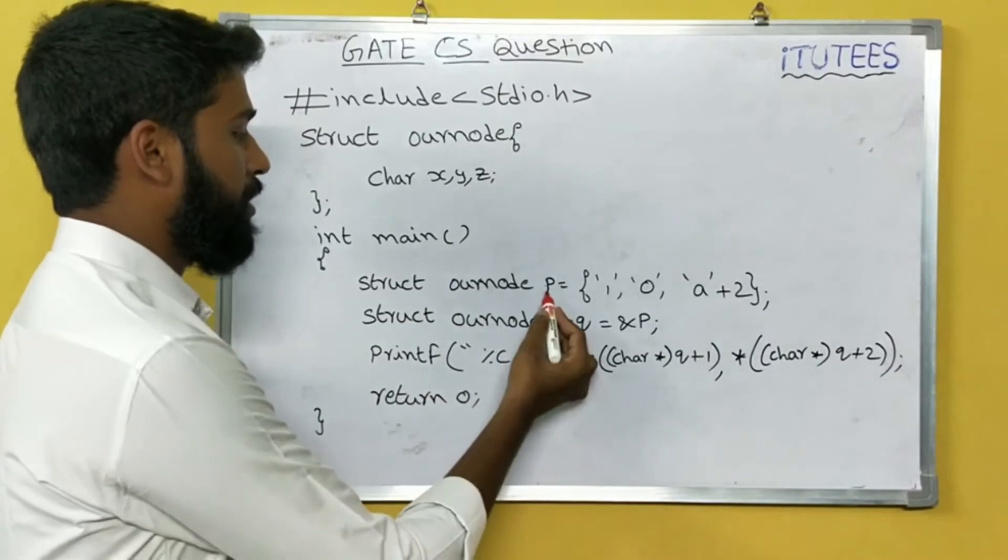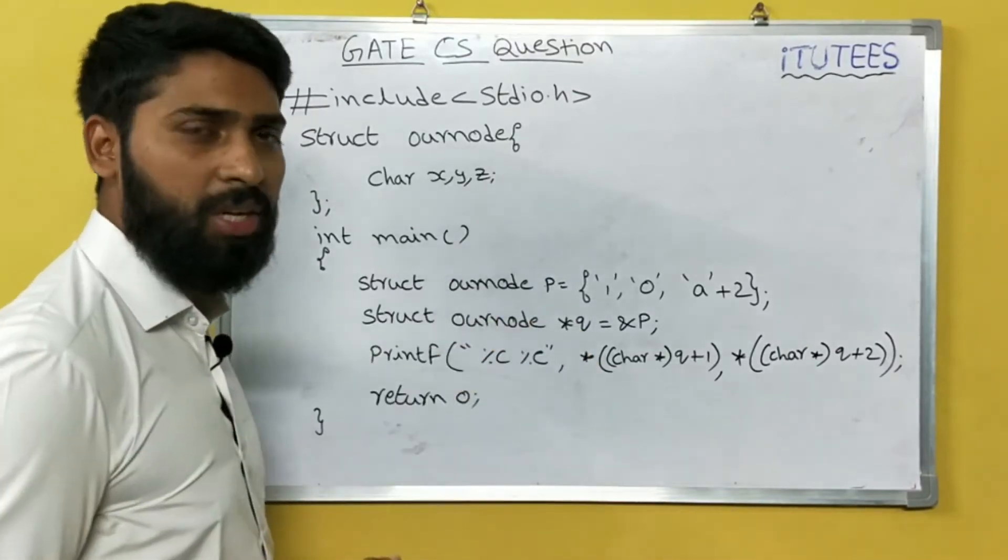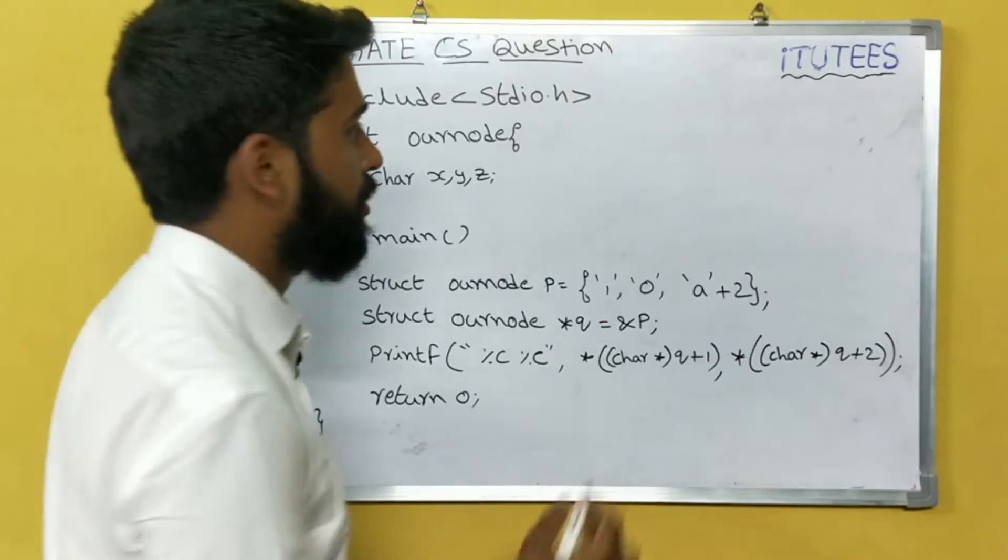Next, you are creating object P to structure ournode. What it is: 1, 0, 'a' plus 2.